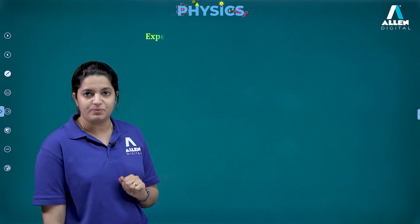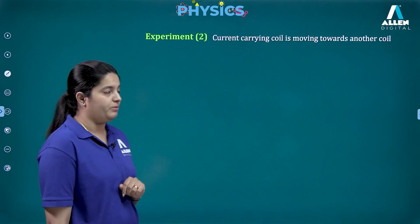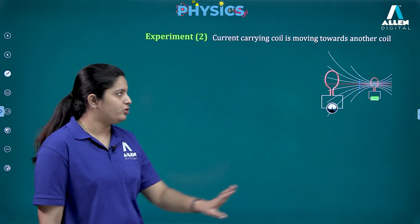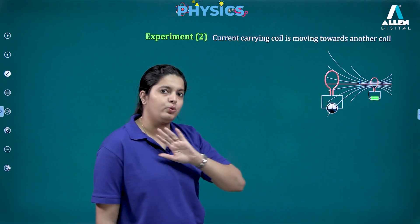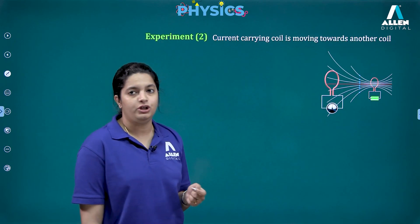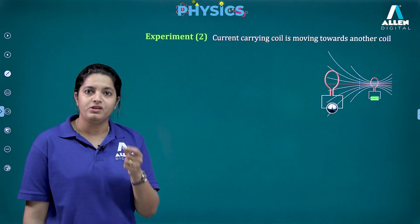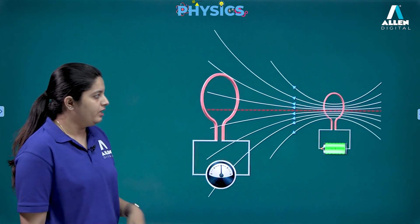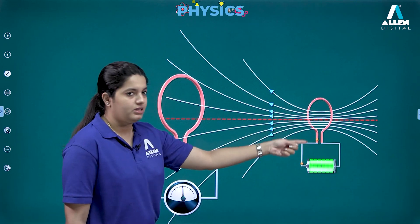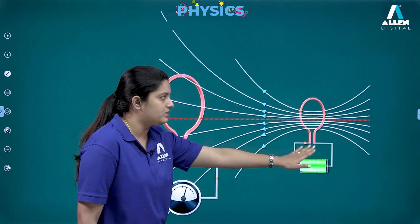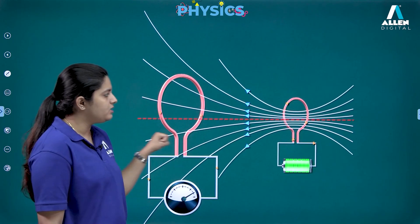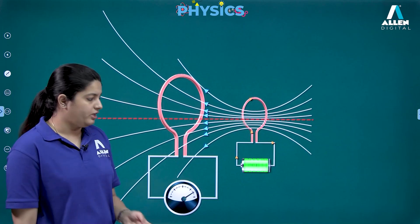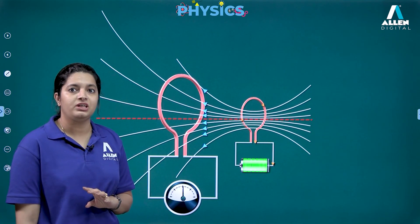This led him to the second experiment. Instead of a magnet, he took two coils. The primary coil was connected only to a galvanometer. The secondary coil had a power source attached. He switched on the circuit, allowed current to flow, then started moving the secondary coil towards and away from the primary coil. Again, deflection was observed in the galvanometer.